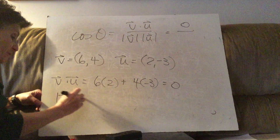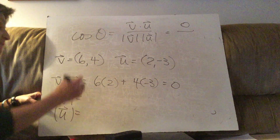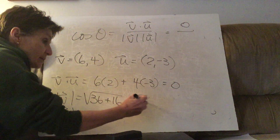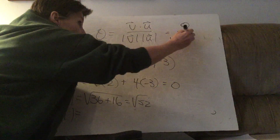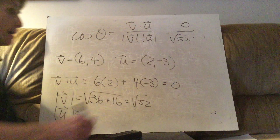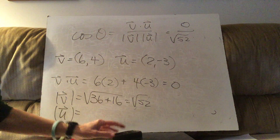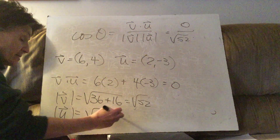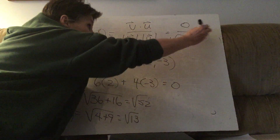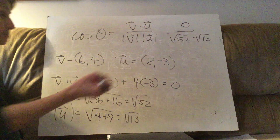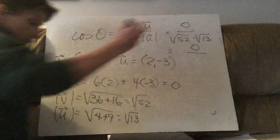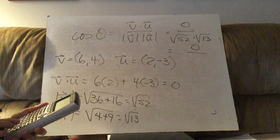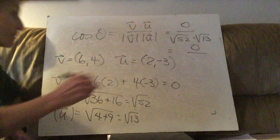Now I need the magnitude of each vector. Magnitude of v: square the first, square the second, add up and take the square root — that's root 52. The magnitude of u is 4 plus 9, so the square root of 13. Multiplying 52 times 13 gives 676.